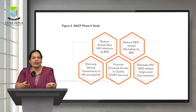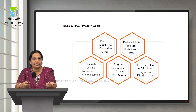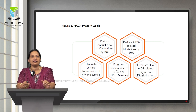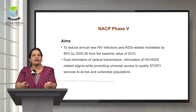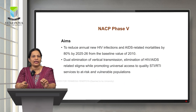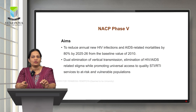NACP Phase 5 has five goals: reducing annual new HIV infections by 80%, reducing AIDS related mortalities by 80%, eliminating vertical transmission of HIV and syphilis, promoting universal access to quality STI RTI services, and eliminating HIV AIDS related stigma and discrimination. The aim is to reduce annual new HIV infections and AIDS related mortalities by 80% by the year 2025-26 from the baseline of 2010, dual elimination of vertical transmission, elimination of HIV AIDS related stigma, while promoting universal access to quality STI RTI services for at risk and vulnerable populations.